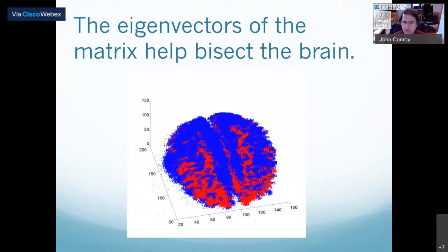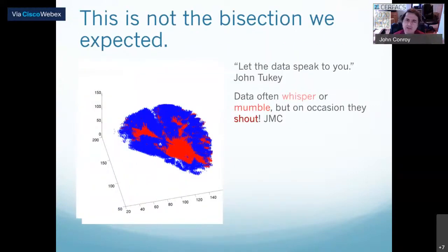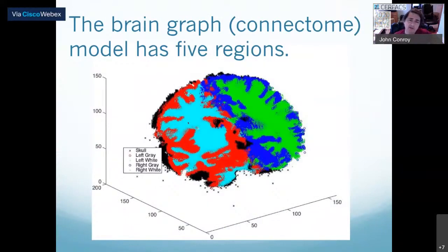I went to Hopkins and spoke to my colleagues. Joshua Vogelstein, who's a neuroscientist, suggested dissecting the image. John Tukey, of course, has let the data speak to you. Sometimes things shout out at you in data. In this particular case, this was not a left hemisphere, right hemisphere partitioning. It was something else. For Joshua, it whispered actually something different of the brain: the gray matter and white matter of the brain.